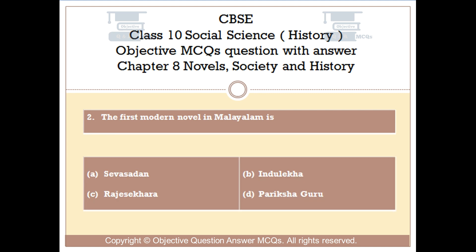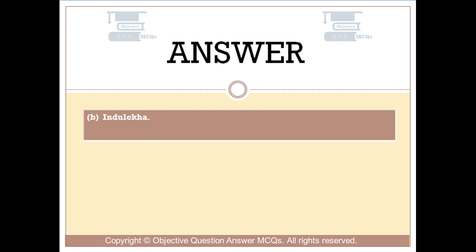Question number 2. The first modern novel in Malayalam is: Option A: Sevasadan. Option B: Indulekha. Option C: Rajeshkara. Option D: Parikh Shah Guru. The right answer is Option B — Indulekha.